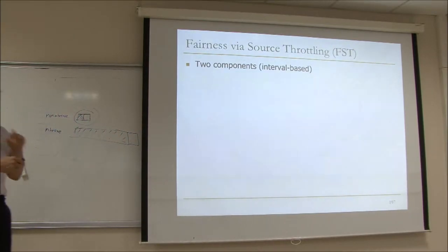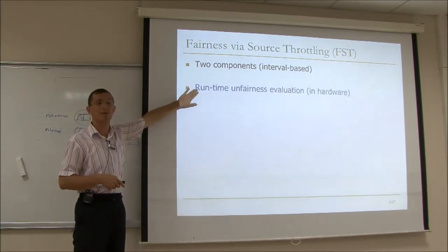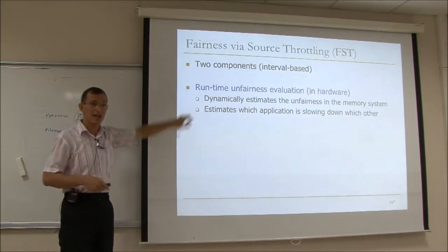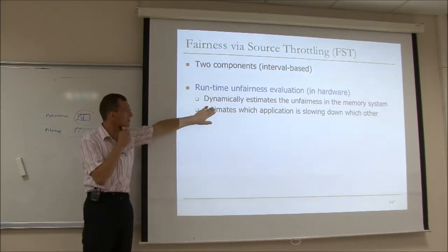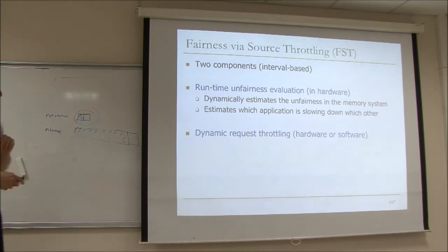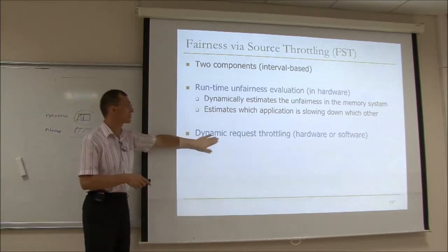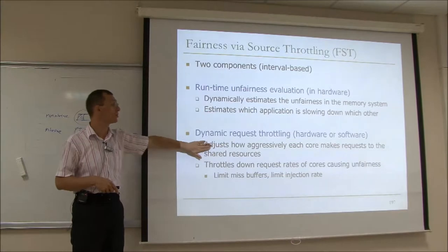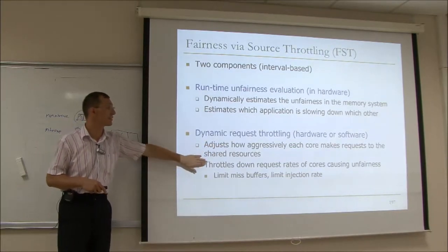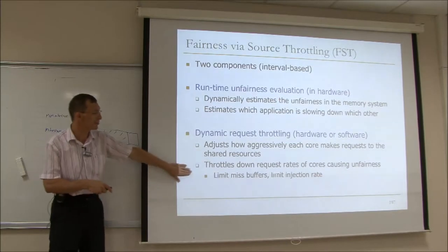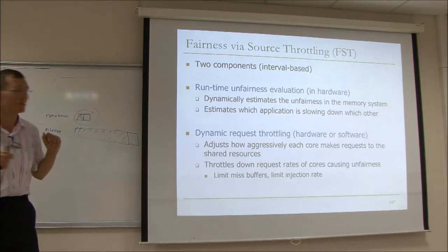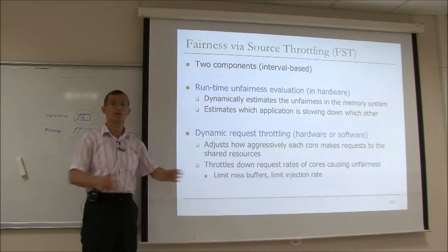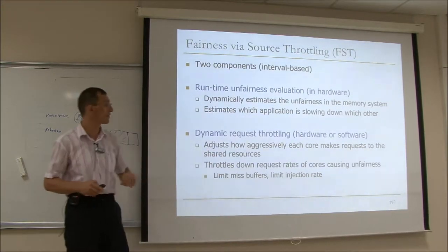There are two components in fairness via source throttling. It's an interval-based mechanism. The first is runtime unfairness evaluation done in hardware, which adds enough hardware counters to dynamically estimate the unfairness in the memory system and estimate which application is slowing down which other one. The second is dynamic request throttling, which could be hardware or software. It adjusts how aggressively each core makes requests to shared resources, and throttles down request rates of cores causing unfairness. We'll use two mechanisms: limiting injection rate, and limiting miss buffers to reduce core parallelism.